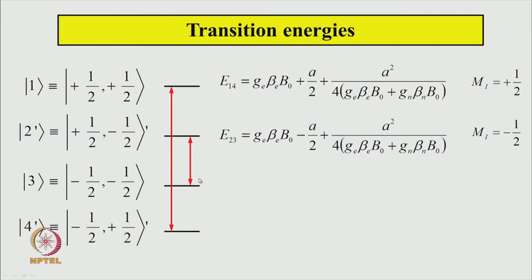So these are the energies of the 2' and 4' states. Having found these four energy levels, we can now find the transition energies. These are the transition energies where mi does not change: transitions from state 1 to 4' and from 2' to 3, corresponding to mi = +½ and mi = -½ respectively. If the second order correction was not applied, the energy levels would be split equally by +A/2 and -A/2, which is the first order splitting. But when you include the second order correction, both transition energies have increased by this additional amount. So that is something different.